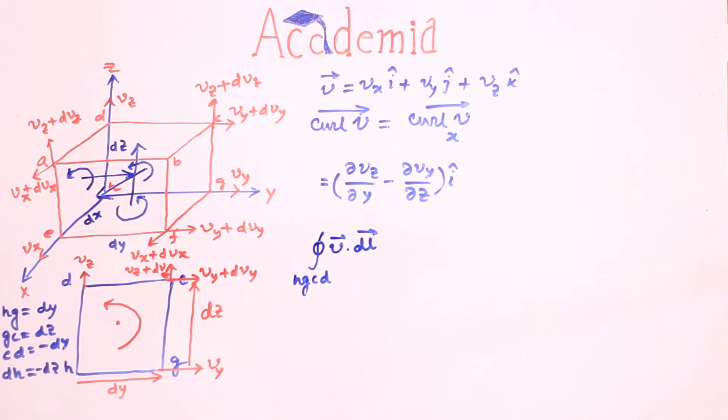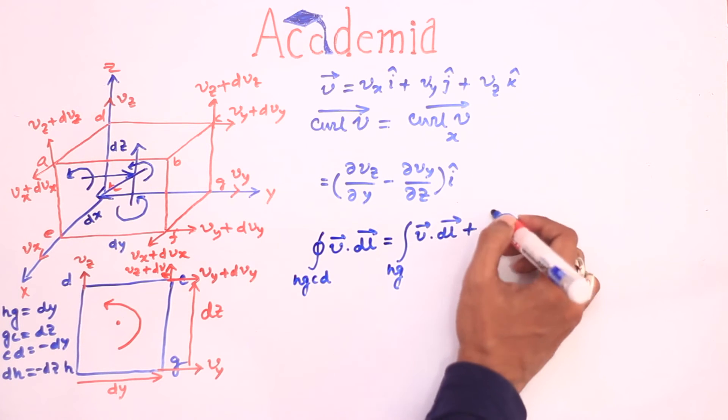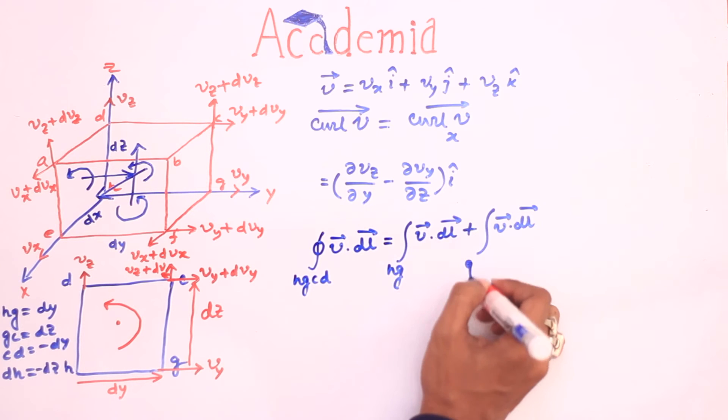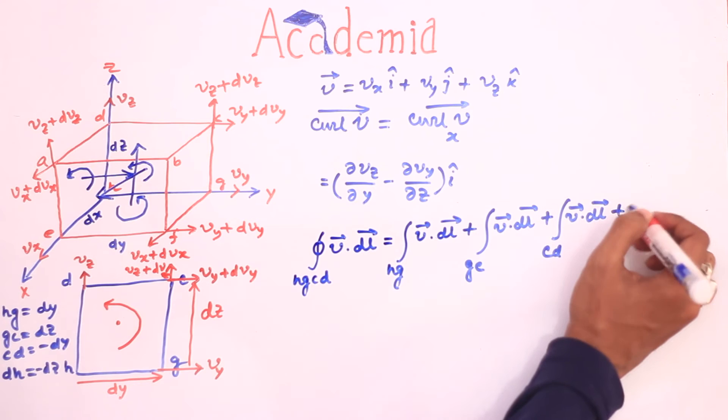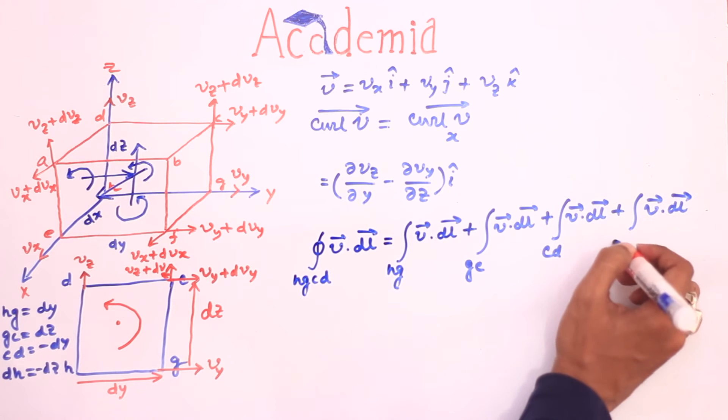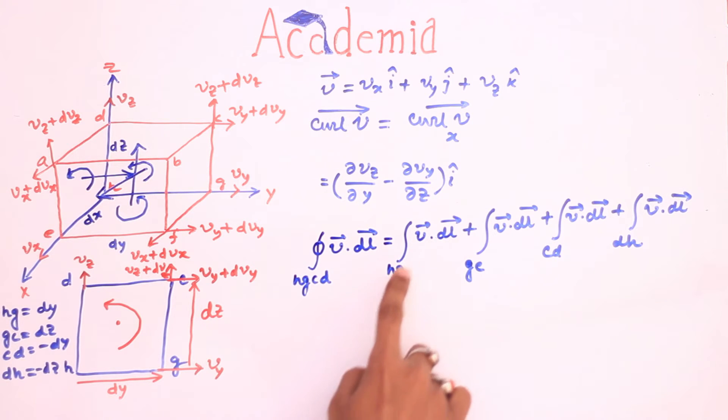Now this integral can be written as integration V dot dl over Hg plus integration over gc V dot dl plus integration of V dot dl over cd along hg. V is vy which is constant and comes out of the integral and integration dl over hg is hg which is dy so it is vy dy.